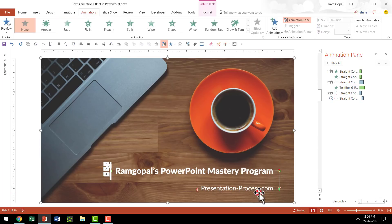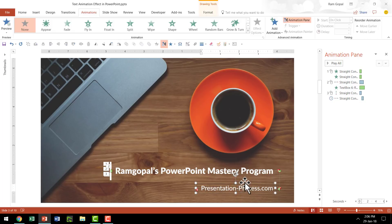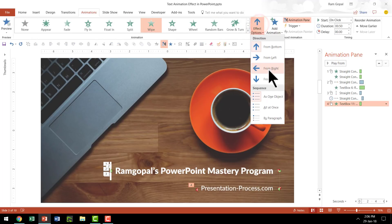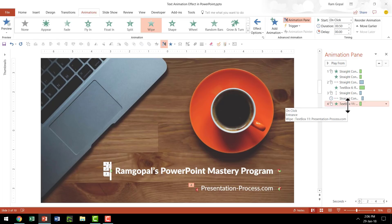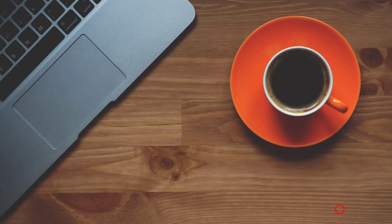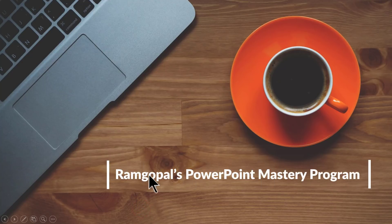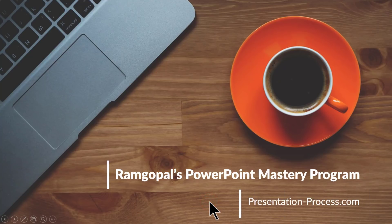As we did earlier, we are going to apply a wipe animation to the text component. I am going to say wipe, and it is going to be revealed from right. The duration has to be 0.25 seconds more than the previous animation, so I am going to select this, say with previous, and set the duration to 0.75 seconds, and we are done. Let us go to slideshow mode to see the entire thing in action. On a click I bring in the two lines, then on a click I reveal the first text element which is the title, and then on the next click this movement happens revealing the subtitle.